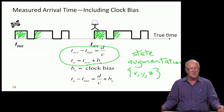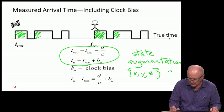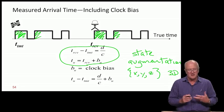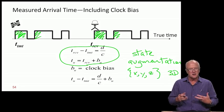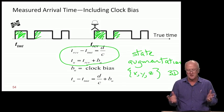We would have been happy with a three-dimensional position. Sometimes people write latitude, longitude, and altitude rather than x, y, z, but it's the same story—three unknowns.